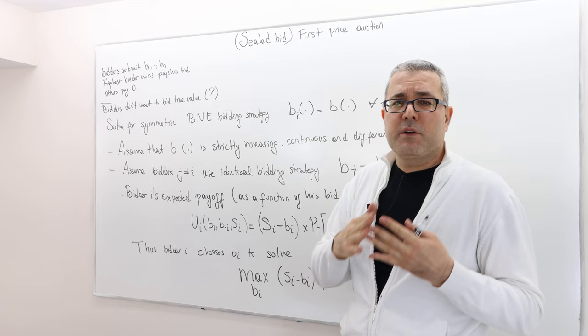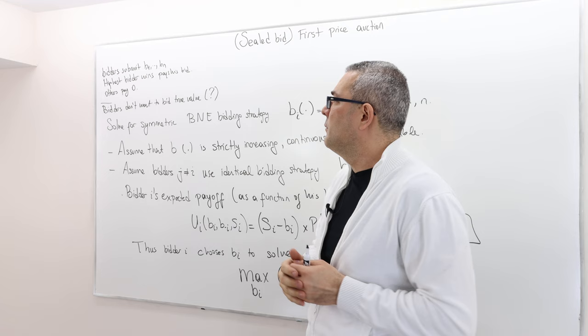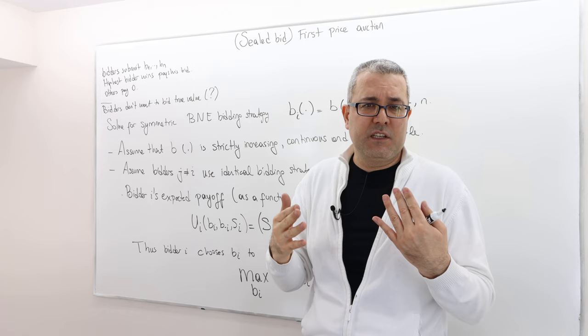Let's remember what the first price auction is. N bidders simultaneously and independently submit their bids in a sealed bid: B1, B2, all the way up to BN. The highest bidder wins the object and pays his bid, B_I. Everybody else pays nothing and gets nothing.